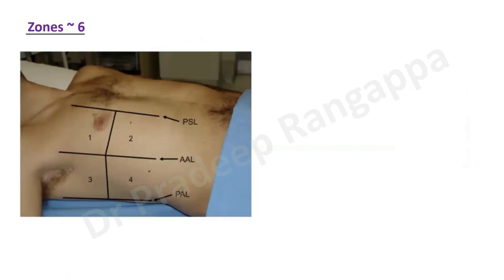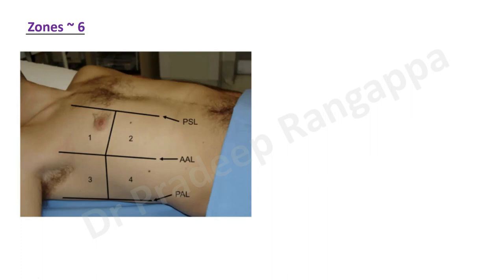For lung ultrasound, we divide the chest into six zones. Zone one and two are along the parasternal line. Zones three and four are along the anterior axillary line. Zones five and six are along the posterior axillary line — the PLAPS point — where we look for consolidation and pleural effusion. So in total you have six zones: PSL is parasternal, then anterior axillary line, then posterior axillary line for the PLAPS point.